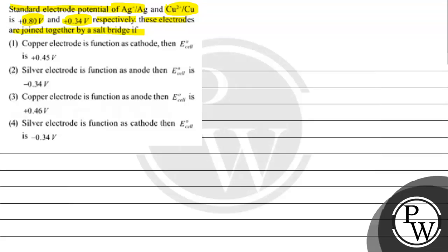Option one: copper electrode functions as cathode then E°cell is +0.45 volt. Option two: silver electrode functions as anode then E°cell is -0.34 volt. Option three: copper electrode functions as anode, E°cell is +0.46 volt. Option four: silver electrode functions as cathode then E°cell is -0.34 volt.